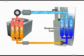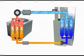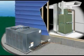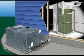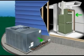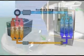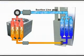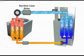The heat-laden refrigerant is now removed from the evaporator by way of a suction line. This line is a length of tubing enclosed in insulation. The refrigerant travels through this tubing until it reaches the suction line dryer.